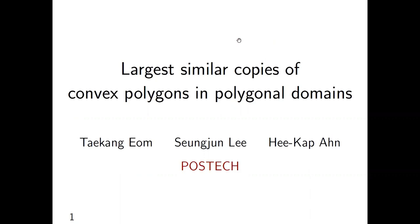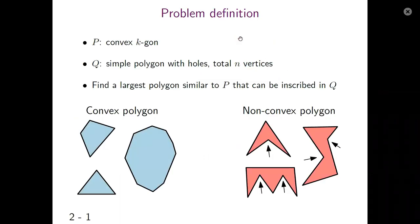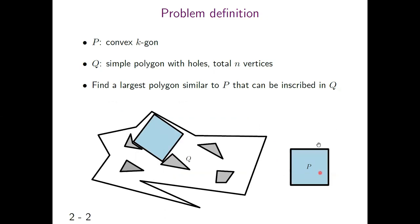Let's define our problem more precisely. Before I define the problem, I will mention comebacks. Left polygons are comebacks and right polygons are non-comebacks. Right are not comebacks because of the pointed parts. Let P be a convex polygon with k vertices and let Q be a closed region with some obstacles with total n vertices. The goal is to find the largest polygon similar to P that can be inscribed in Q. In this case, P is allowed translation, scale, and rotation.